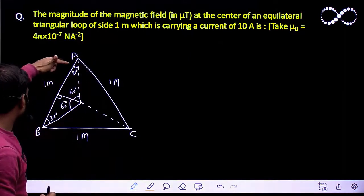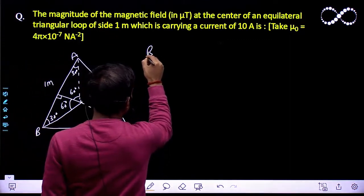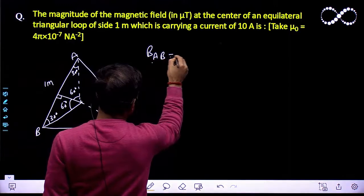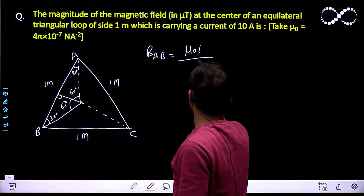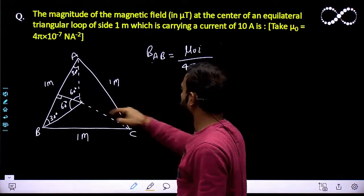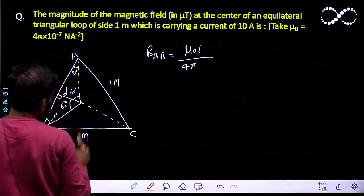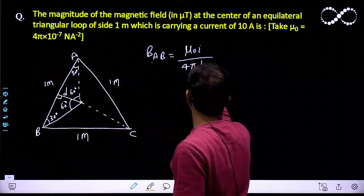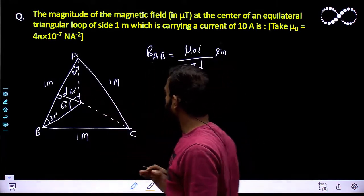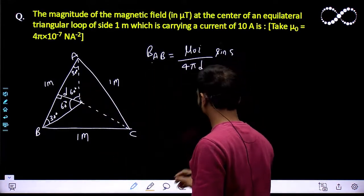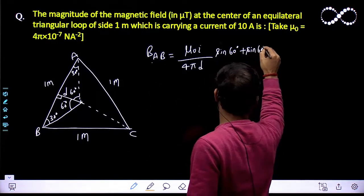Let us find the magnetic field due to side AB. The magnetic field due to AB is equal to μ₀I upon 4πD, where this distance is D — from the center perpendicular to the side. And that will be sin 60 degrees plus sin 60 degrees.